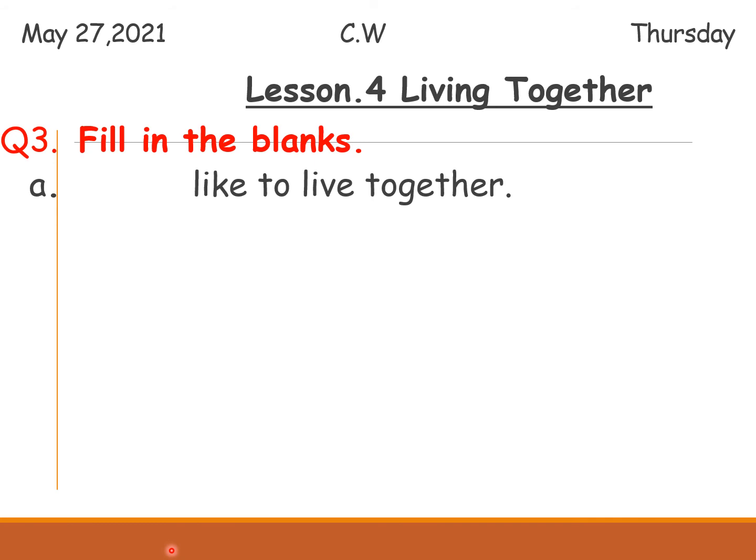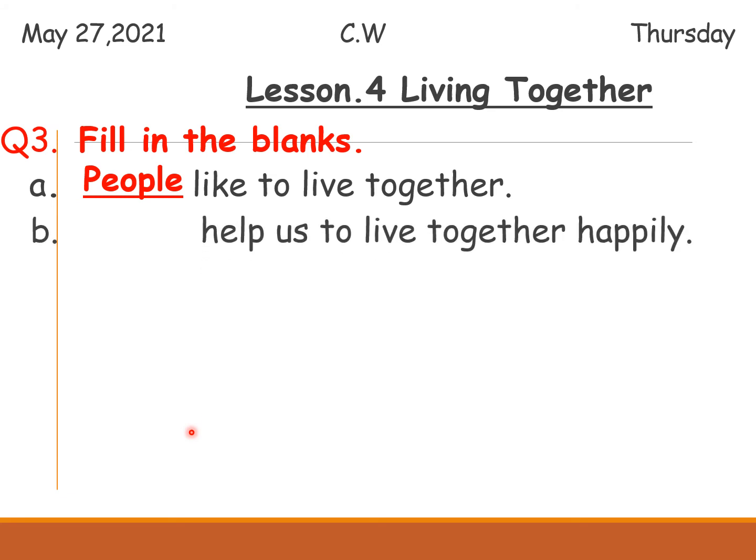Sentence A: A blank likes to live together. Who likes to live together? People like to live together. Sentence B: blank help us to live together happily. Which thing helps us to live together happily?